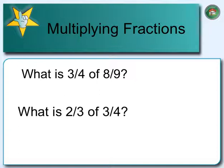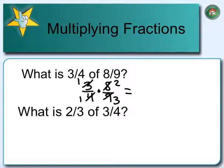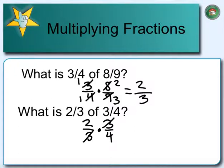What if we had things in word form, like 3 fourths of 8 ninths? You might know that 'of' means multiplication, so we need to do 3 fourths times 8 ninths. We can simplify first — I always like to simplify first — and we get 1 and 3, then 1 and 2, which means 1 times 2 is 2, and 1 times 3 is 3. We can do the same thing for 2 thirds times 3 fourths and simplify to get 1 half.